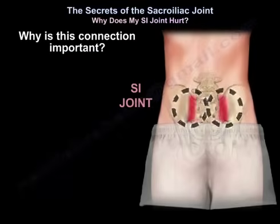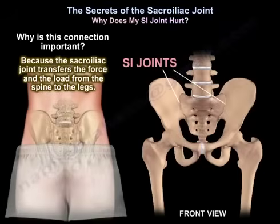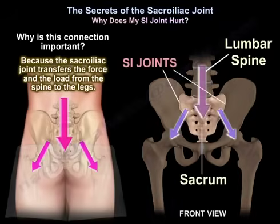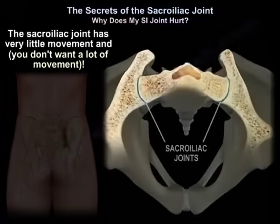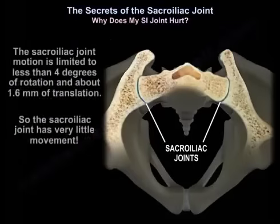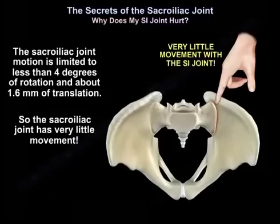Why is this connection important? Because the sacroiliac joint transfers the force and the load from the spine to the legs. The sacroiliac joint has very little movement — limited to less than four degrees of rotation and about 1.6 millimeters of translation.